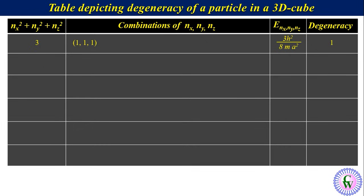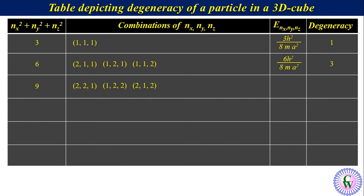For the first excited state, nx²+ny²+nz² equals 6; the three combinations are (2,1,1), (1,2,1) and (1,1,2); total energy is 6h²/8ma²; and degeneracy is 3. For the second excited state, nx²+ny²+nz² equals 9; the three combinations are (2,2,1), (2,1,2) and (1,2,2); total energy is 9h²/8ma²; and degeneracy is 3. For the third excited state, nx²+ny²+nz² equals 11; the three combinations are (3,1,1), (1,3,1) and (1,1,3); total energy is 11h²/8ma²; and degeneracy is 3.